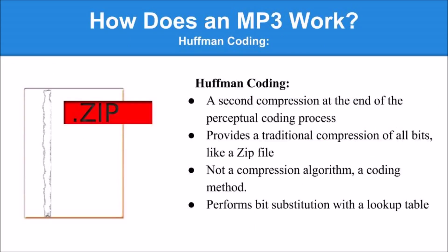At the end of the perceptual coding process, the MP3 runs a second compression process — a Huffman coding technique. This process is a traditional compression of all the bits in the file taken together as a whole, similar to a standard compression mechanism such as a zip file.